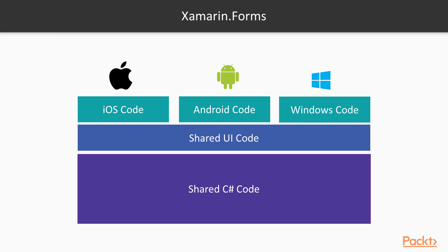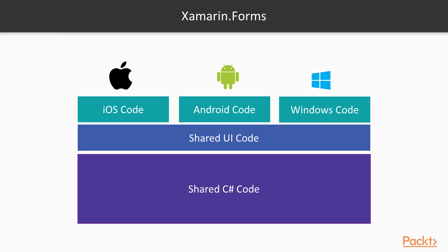But why do we still need to write platform-specific code? Well, there's a very important reason why that happens. You see, iOS and Android expose totally different APIs for handling device features. So if your application needs to access the device's GPS, for example, then you need to communicate with a native component. The same applies to UI components that are only supported by a single platform.